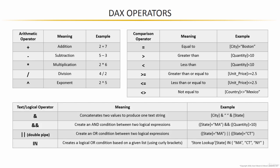Where it gets more interesting is with text and logical operators — these are a bit different from other formula languages. The ampersand is a concatenation tool for combining values into a single text string. The double ampersand is an AND condition, and the double pipe is an OR condition — found by holding Shift and pressing the key beneath Backspace. The fourth operator, IN, creates a logical OR statement based on a list in curly brackets. Pay attention to these two especially, as they'll come up in formulas we'll be writing.